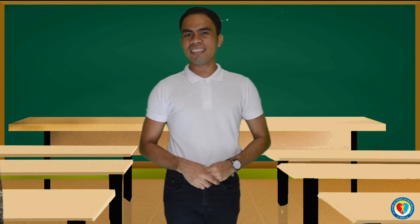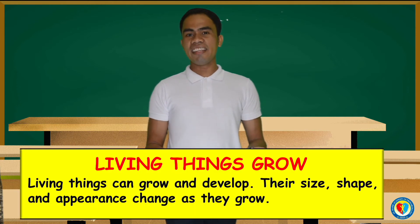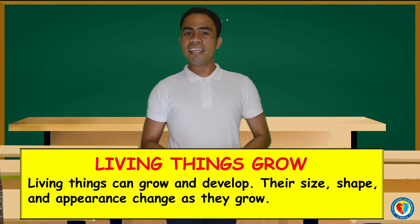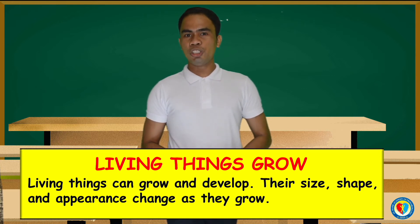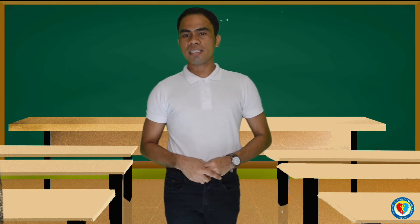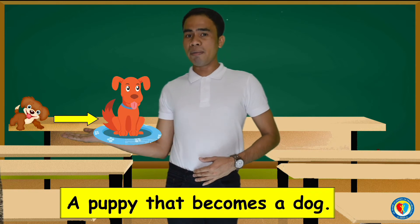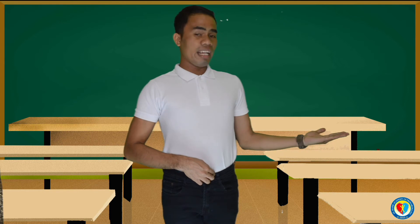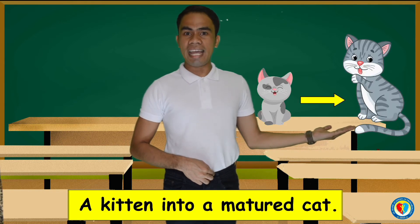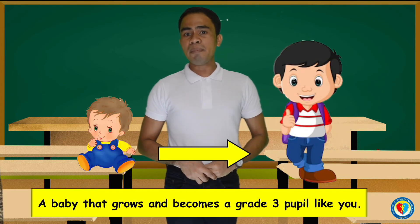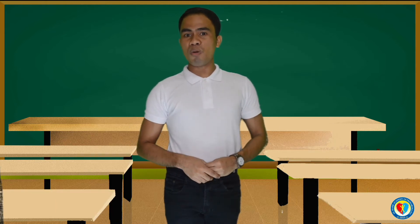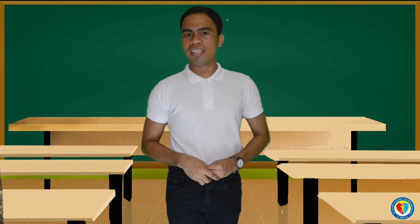Let's proceed to the third characteristic. Living things grow. Living things can grow and develop. Their size, shape, and appearance change as they grow. For example, a puppy that becomes a dog, a kitten that becomes a cat, and a baby that grows and becomes a great person, and many more.